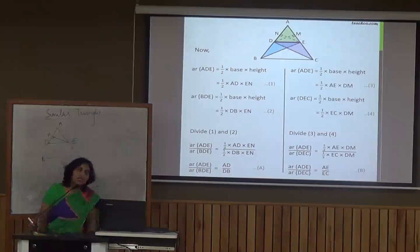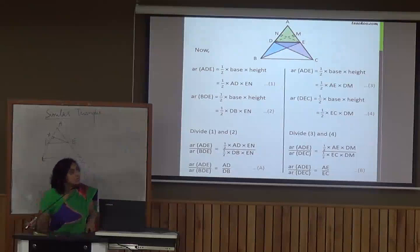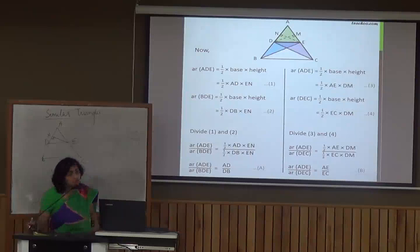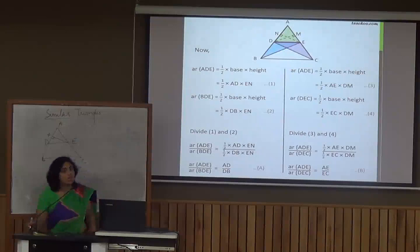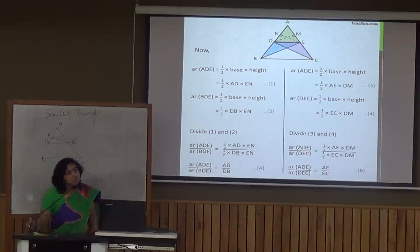Then we find the area of triangle BDE, taking BD as the base. The angle at vertex D is obtuse, so the perpendicular EN goes beyond the triangle. Area of triangle BDE = (1/2) × DB × EN. Dividing both equations: Area(ADE)/Area(BDE) = (1/2 × AD × EN) / (1/2 × DB × EN). Cancelling common factors, we get AD/DB.